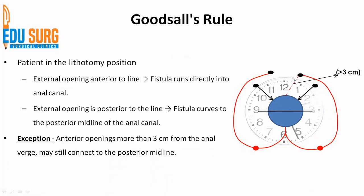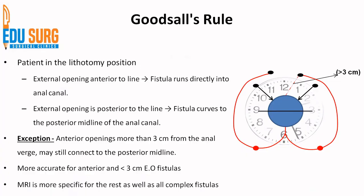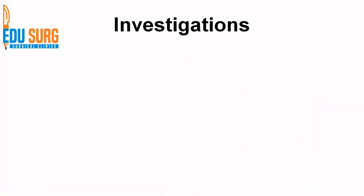For anterior openings more than 3 centimeters from the anal walls — these are complex fistulas — the internal opening is going to be posterior in the midline. For posterior fistulas, the internal opening is in the midline. As a rule of thumb, any posterior external opening points to an opening in the posterior midline, while an anterior external opening within 10 o'clock corresponds to an anterior fistula with a short tract. Goodsall's rule is more accurate for anterior fistulas with less than 3 centimeter external openings; MRI is more specific for all other and complex fistulas.